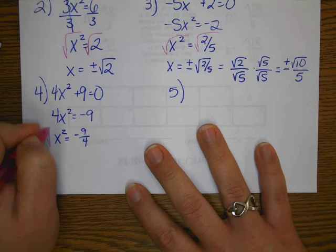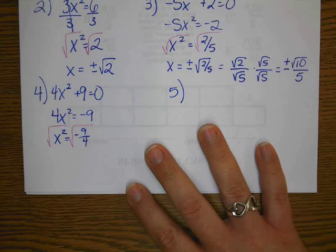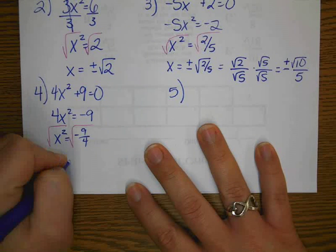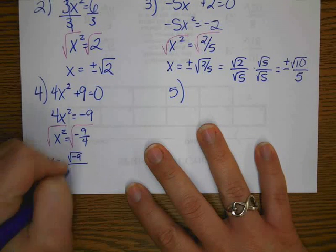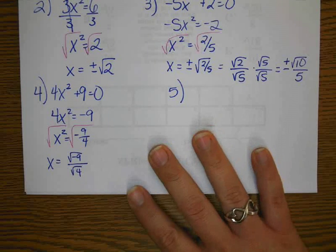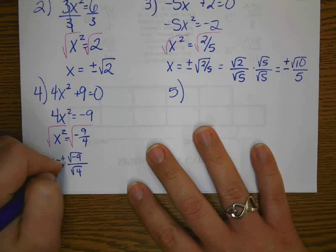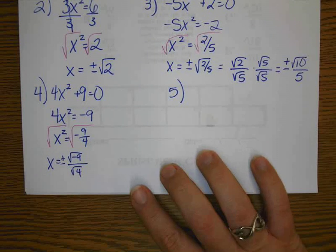When we square root both sides, we have x equals the square root of negative 9 over the square root of 4, right? And with our plus or minus out in the front.